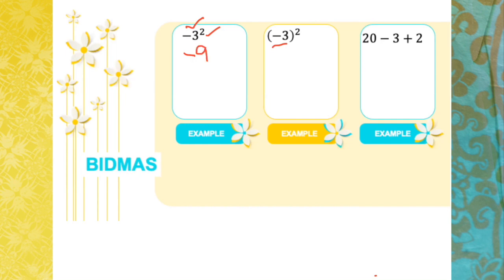On the other hand, when negative 3 is inside brackets as (-3)², the negation is done first before squaring. So this is actually (-3) × (-3), which gives positive 9.